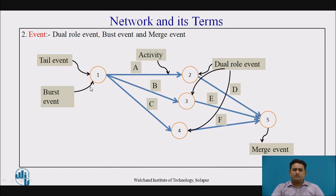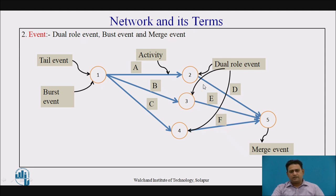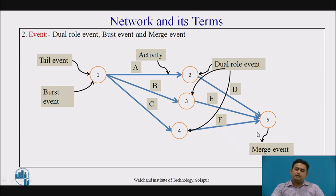Here in this network diagram, event 1 is the starting event from which all activities A, B, and C are going to start. As all activities are starting from event 1, there are all outgoing arrows, so it is known as a bursting event, and this event is also known as a tail event. Events 2, 3, and 4 are playing a dual role — they are the head event of activities A, B, and C, but at the same time they are the tail event of activities D, E, and F. Here, event 5 is where all arrows are merging, so event 5 is known as a merging event.